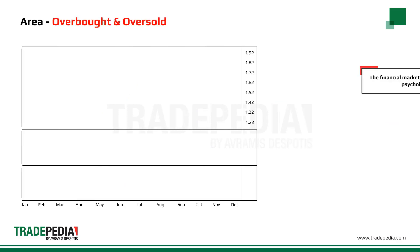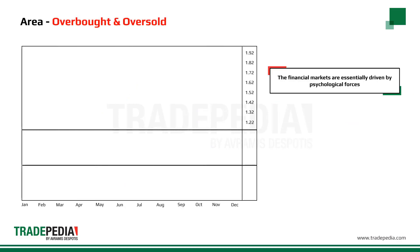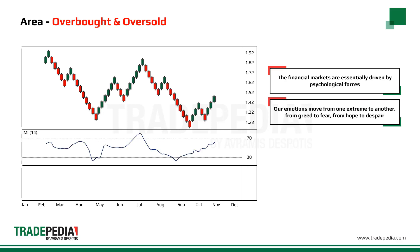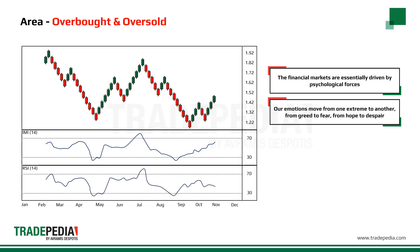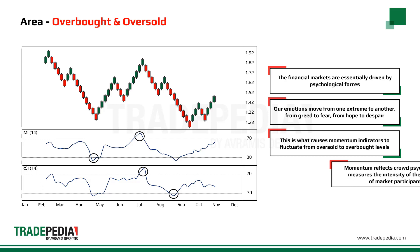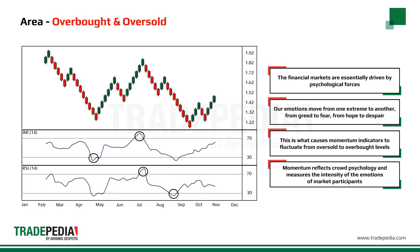The Area. The financial markets are essentially driven by psychological forces. Our emotions move from one extreme to another — from greed to fear, from hope to despair. This is what causes momentum indicators to fluctuate from oversold to overbought levels. Momentum reflects crowd psychology and measures the intensity of the emotions of market participants.